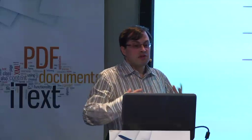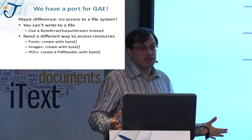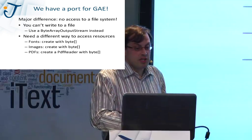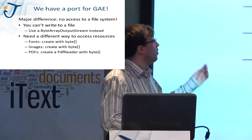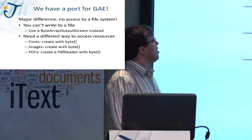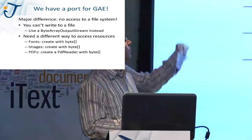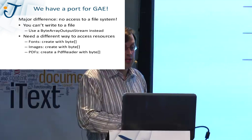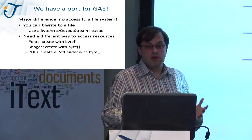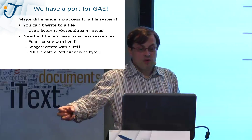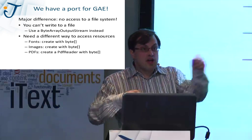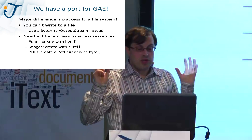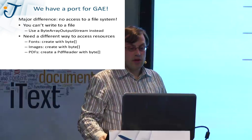While we were experimenting with iText on Android, we also created a port for Google App Engine. The major difference with Google App Engine is you don't have access to a file system — you can't write to a file, so use a ByteArrayOutputStream instead. You also need a different way to access resources, so if you need fonts, images, or an existing PDF, you need to serve them as a byte array.